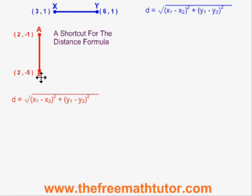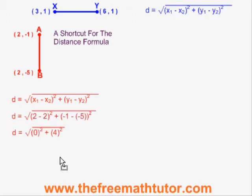In the case of ab, I am replacing x1 and y1 with 2 and negative 1, and replacing x2 and y2 with 2 and negative 5. When I plug these values in, I get the distance formula simplifying like this. I end up with a distance of 4 units.